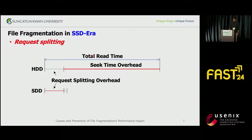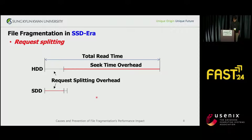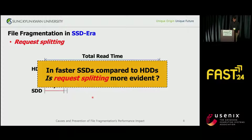Request splitting is the primary cause of the performance drop. This sounds convincing. It was not a big deal in the hard disk case because seek time was way longer than the system's request processing times. But SSDs have no seek time, leaving only request splitting under suspicion. Did SSDs' fast performance finally expose the request splitting overhead? To answer this question, we began a series of experiments.